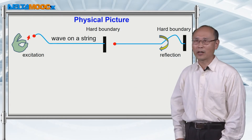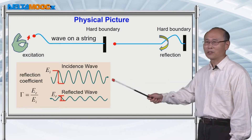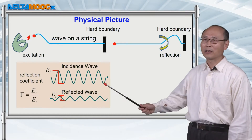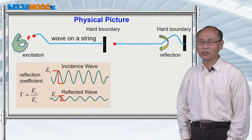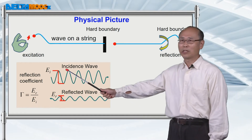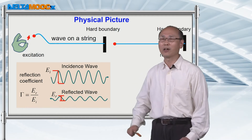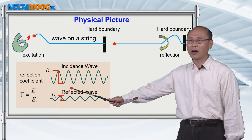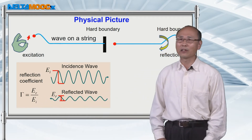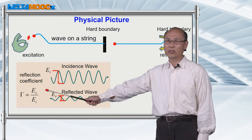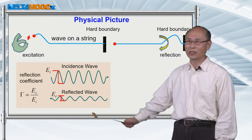Similarly, if you have a boundary in space and you send an electromagnetic wave toward it, some fraction of the energy will be reflected at the boundary. In general, the reflected amplitude is going to be reduced from the initial value of the incident wave. The ratio of the reflected amplitude to the incident amplitude of the field is defined as the reflection coefficient, from which you can calculate the reflected power as a fraction of the incident power.